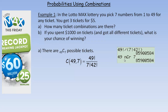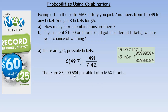Or if you have a calculator with a combination function on it, you will get exactly the same thing. So there are just under 86 million — 85,900,584 possible LottoMax tickets. So there's a lot of them.